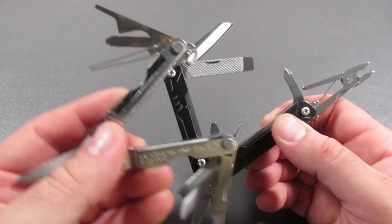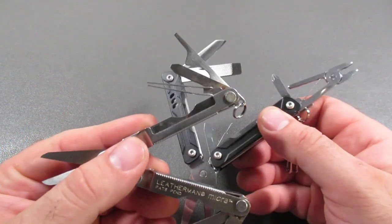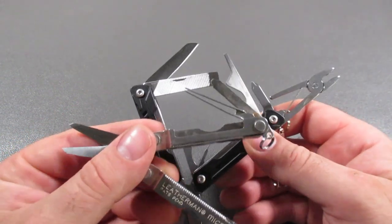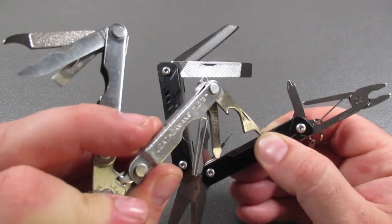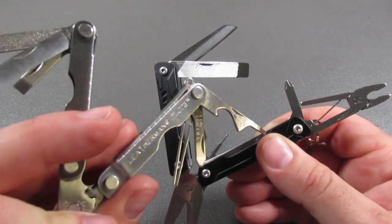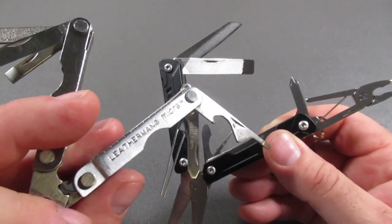Now comparing the tool set to the Leatherman Micra, the Leatherman has tweezers instead of pliers. It has this sort of multi-tool on a multi-tool right here with several functions right here.